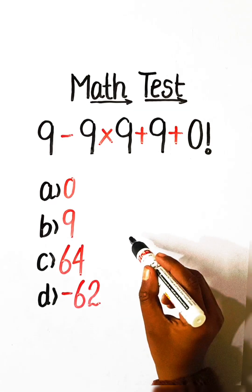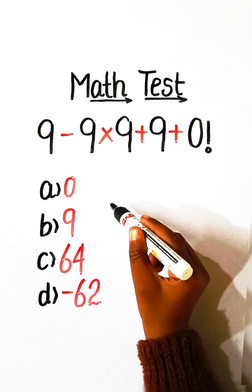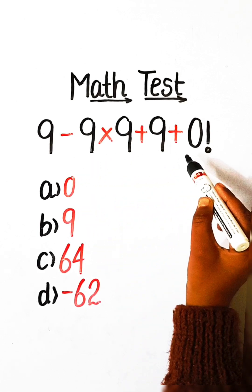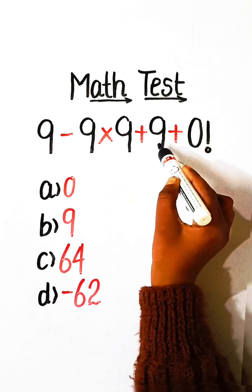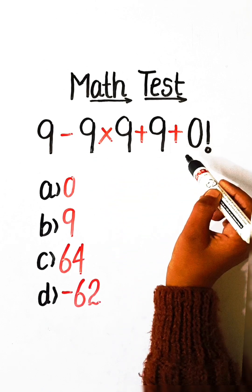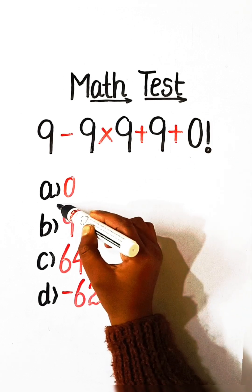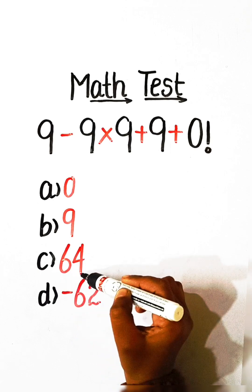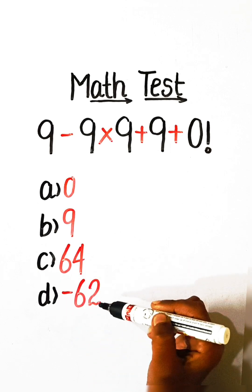Hello everyone, welcome to my YouTube channel. In this video we will solve this simplification equation: 9 minus 9 multiply by 9 plus 9 plus 9 plus 0 factorial equals to what? Option A: 0, Option B: 9, Option C: 64, or Option D: minus 62.